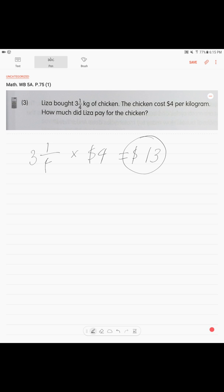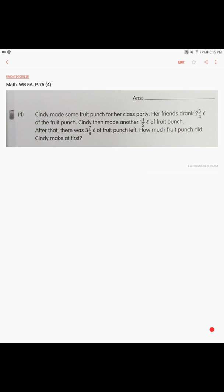Okay, second problem on page 75: Cindy made some fruit punch for her class party. Her friends drank two and three-fourths liters of the fruit punch. Cindy then made another one and a half liters of fruit punch. After that, there were three and seven over eight liters of fruit punch left. How much fruit punch did Cindy make at first?